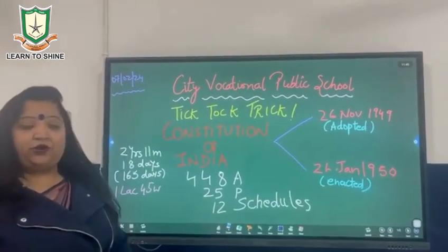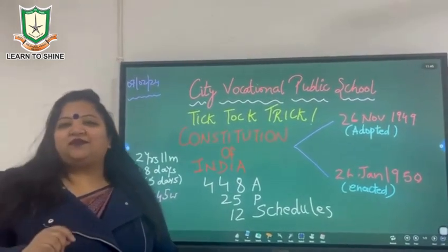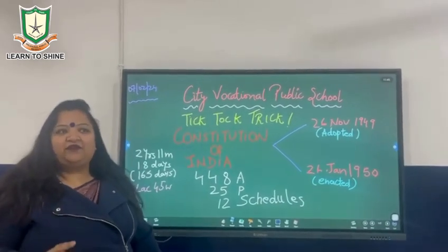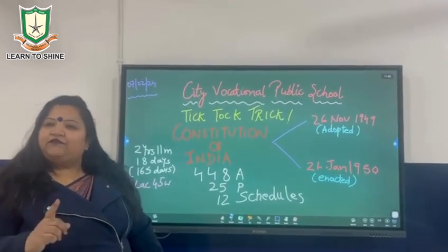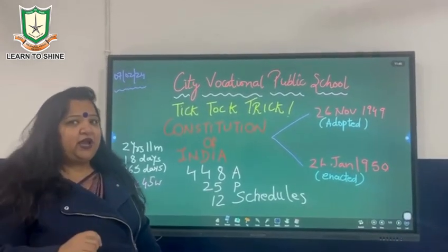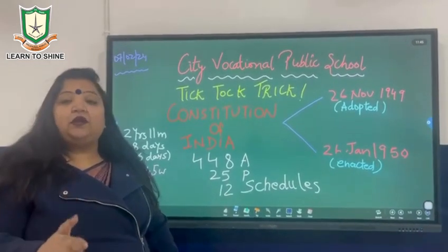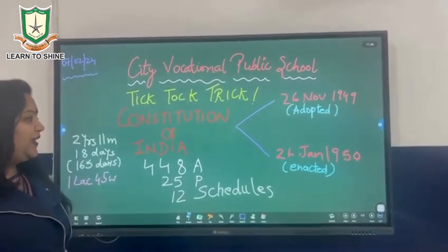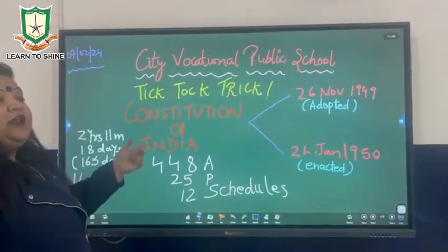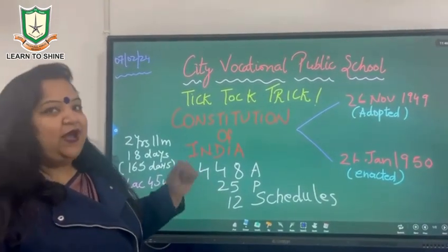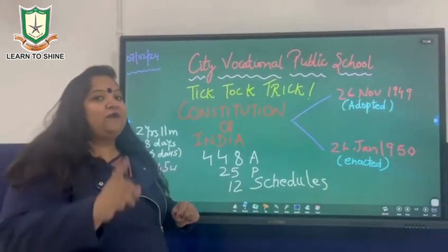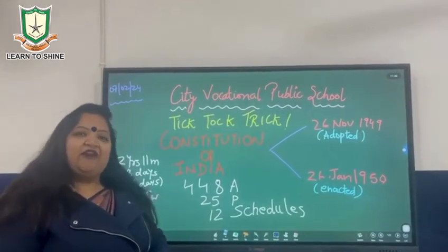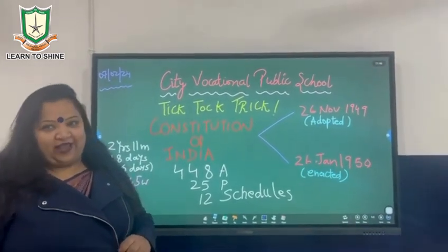Our constitution was adopted on 26th November 1949, but it was enacted on 26th January 1950. Why 26th January 1950? Because on 26th January 1929, the Indian National Congress asked for Purna Swaraj. So to remember that day, every year we celebrate our Republic Day on 26th January.